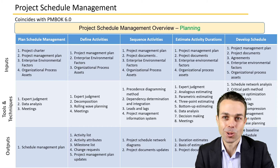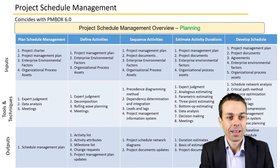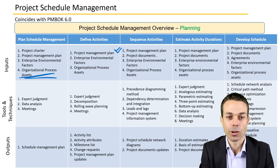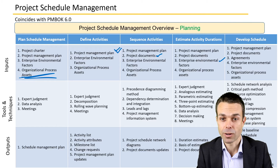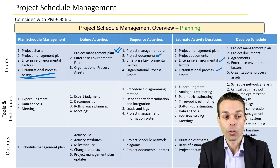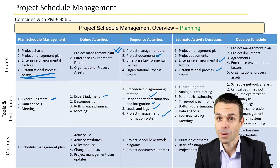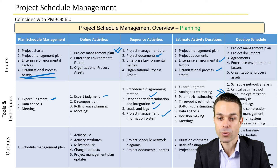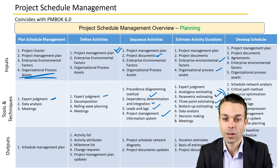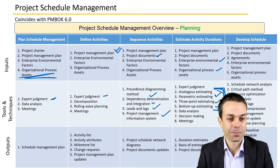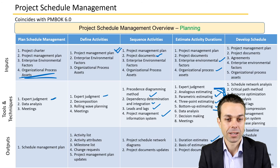Here's an overview of all the inputs, tools, techniques, and outputs for Project Schedule Management. We'll always see the project management plan as an input, along with project documents, enterprise environmental factors, and organizational process assets. For tools and techniques we have expert judgment, leads and lags, the project management information system, dependency determination and integration, and the precedence diagramming method. We also have estimating techniques: analogous estimating, parametric estimating, three-point estimating, and bottom-up estimating.